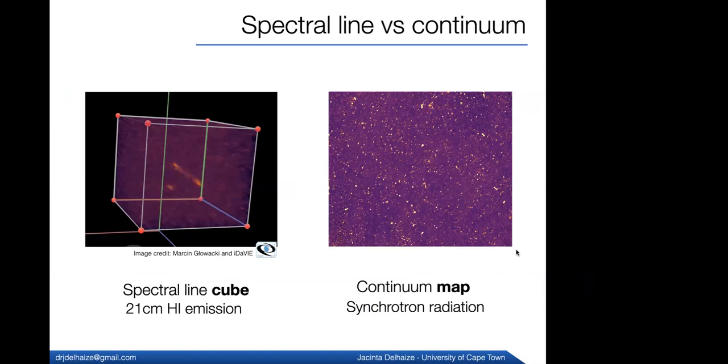All right, so we have a radio telescope. And then what do we see with the radio telescope? There are two kinds of emission that we can study. One is spectral line and the other is continuum. So basically, you get both of them for free at the same time when you do a radio survey of the sky.